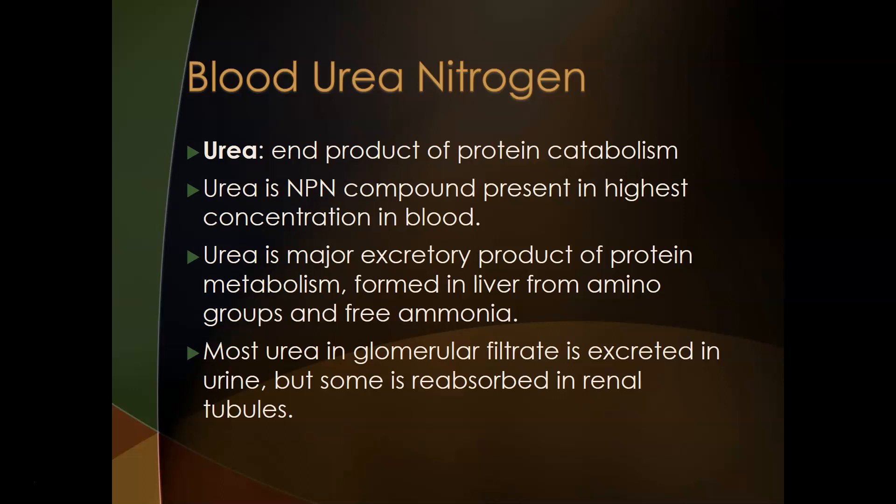Most urea in the glomerular filtrate — which is what eventually becomes urine — is excreted in the urine, but some of it is reabsorbed in the renal tubule, meaning a certain amount is put back into the blood.